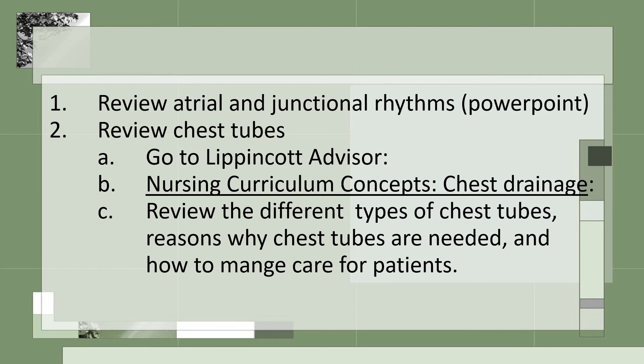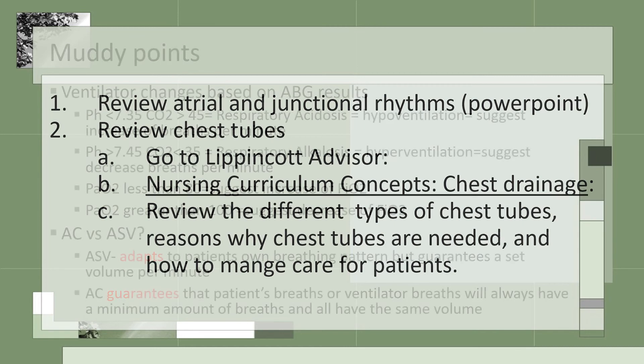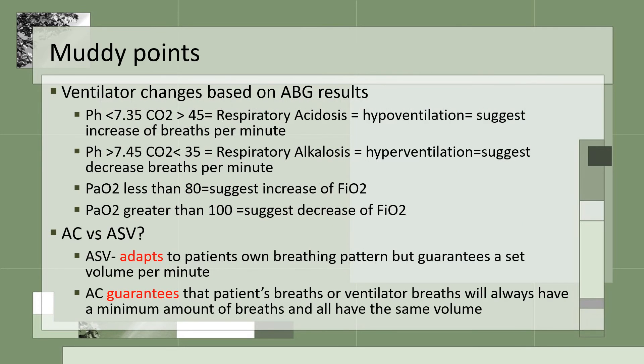Review atrial and junctional rhythms on the PowerPoint and EKG module this week. Also review chest tubes — go to Lippincott Advisor, then Nursing Curriculum Concepts, Chest Drainage, and review the different kinds of chest tubes, why they are needed, and how to manage patient care. Ventilator changes based on ABG results: if pH is less than 7.3 and CO2 is greater than 45 — respiratory acidosis with hypoventilation — suggest an increase in breaths per minute.